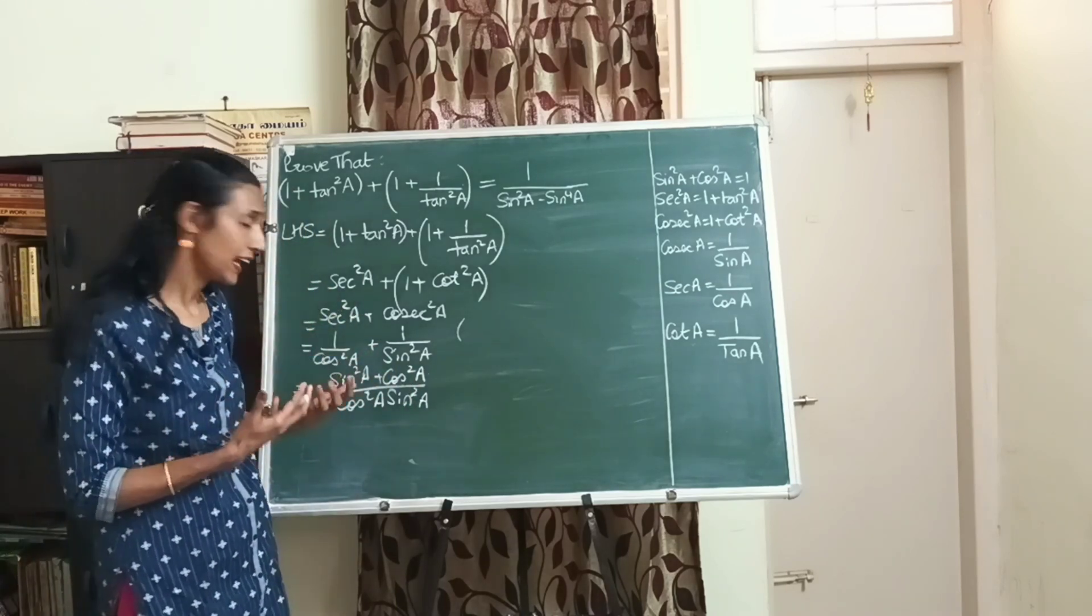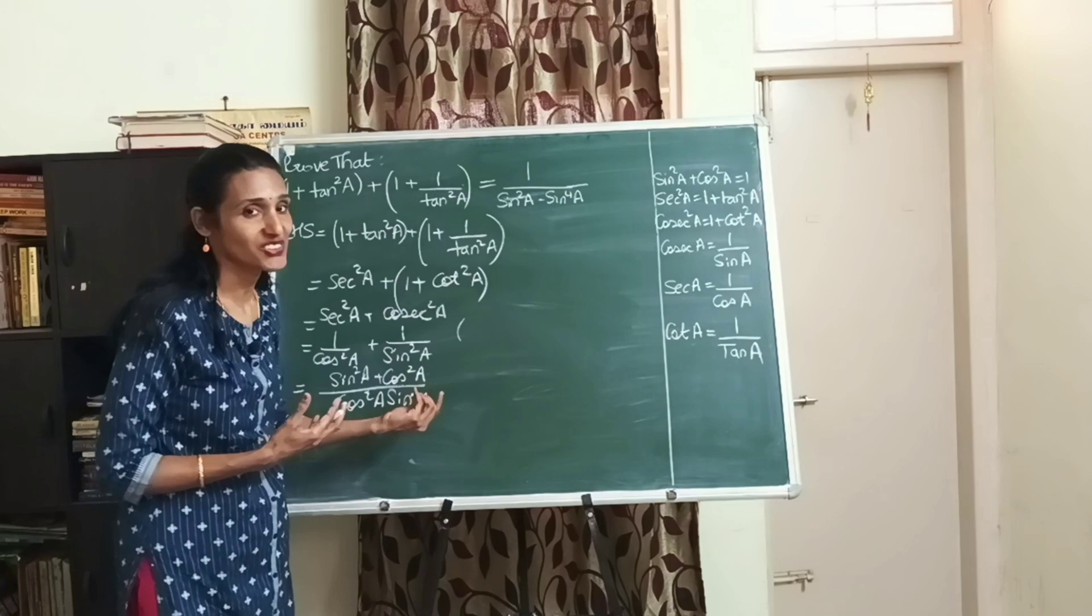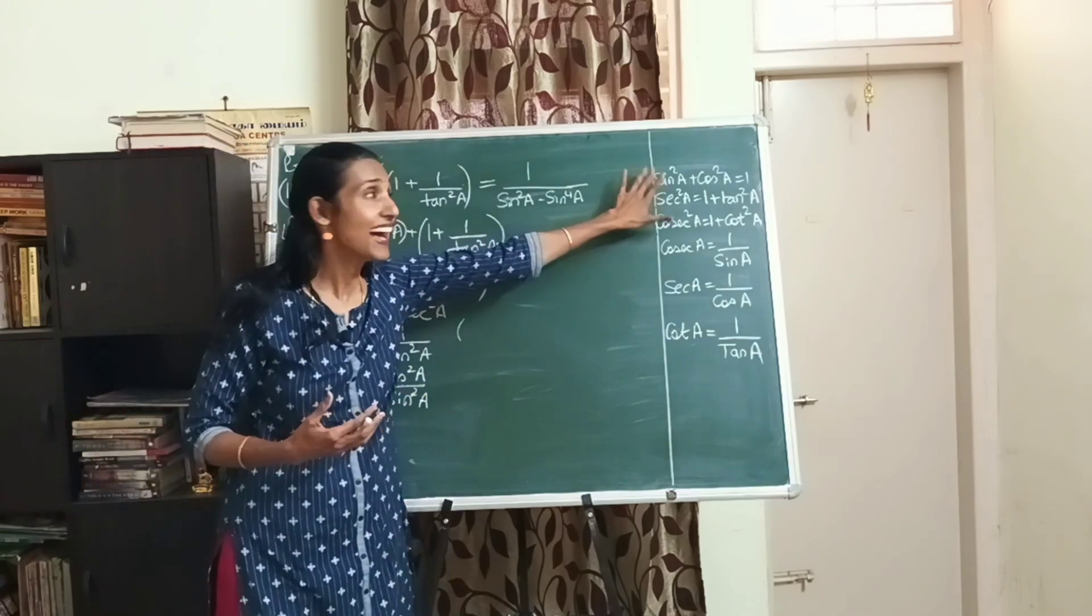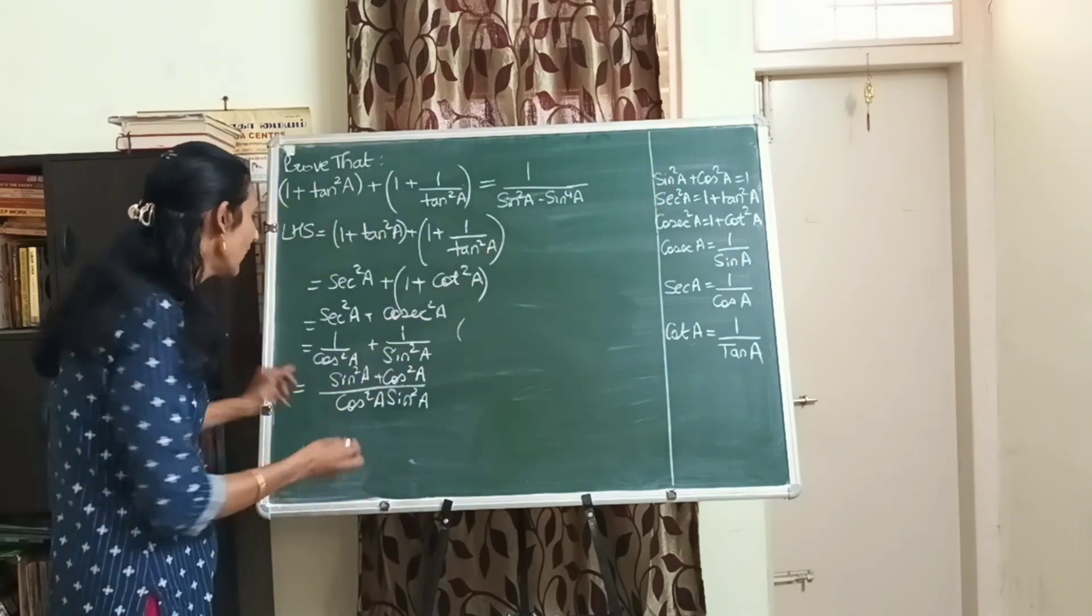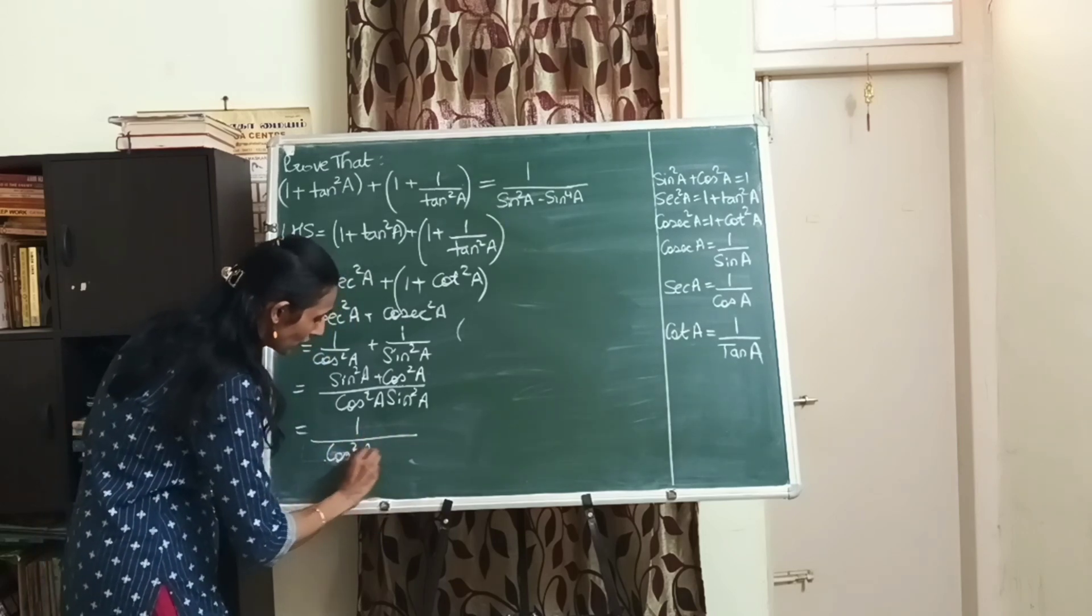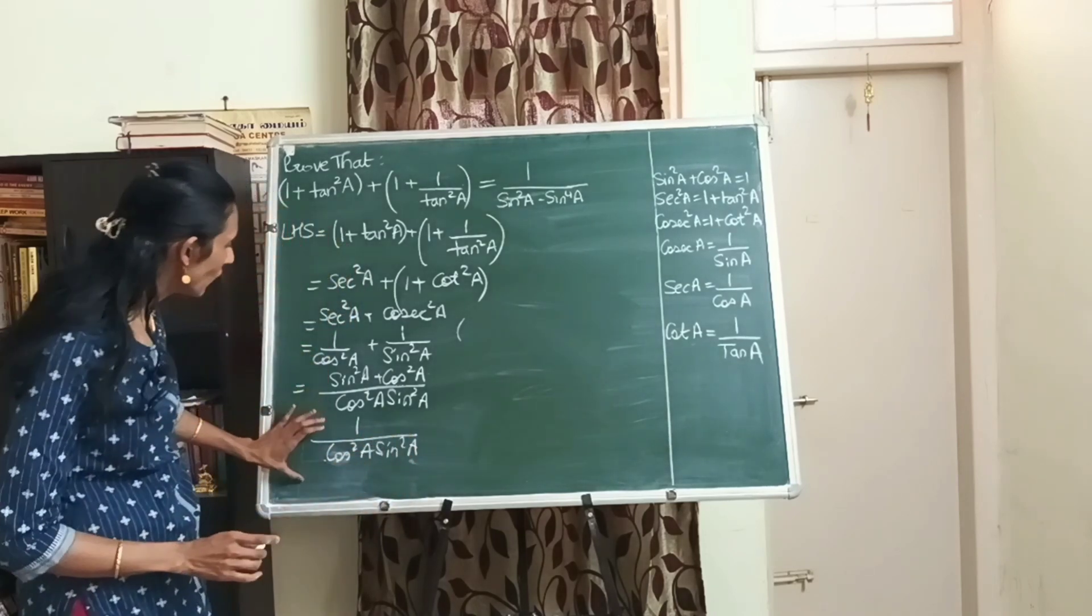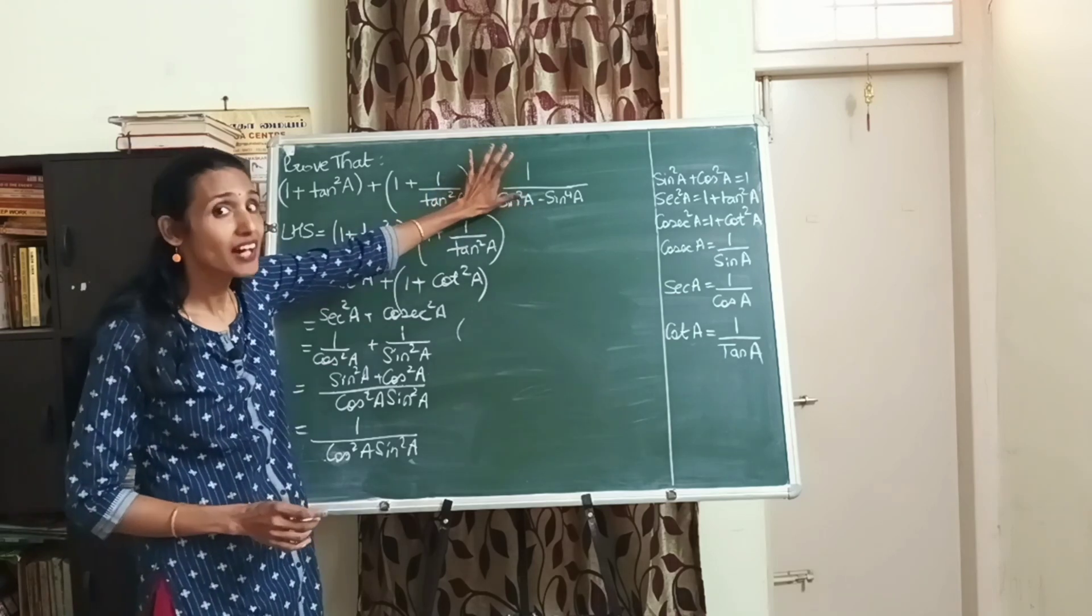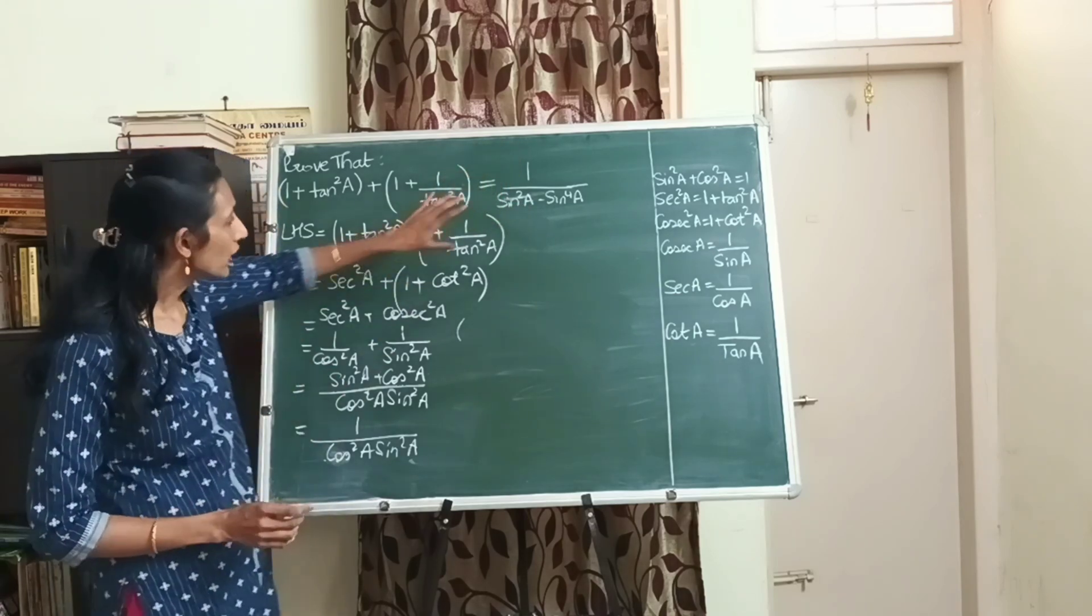Now let me observe what more can I do. Here I have sin square a plus cos square a and that is a direct identity. So now I can write this as 1 by cos square a into sin square a. Did you see? Now we are coming very close to our RHS.